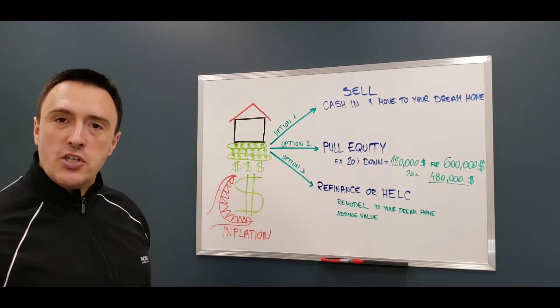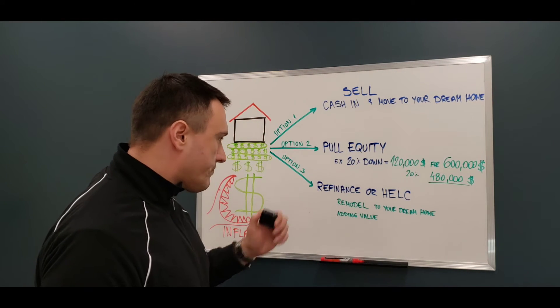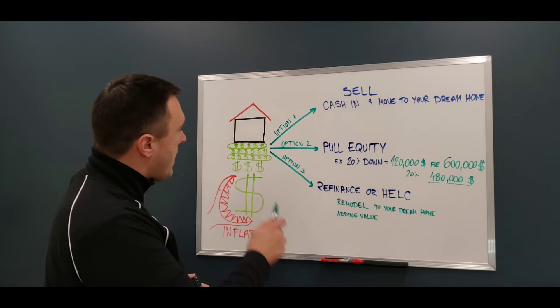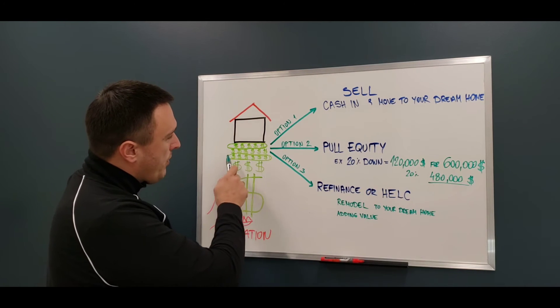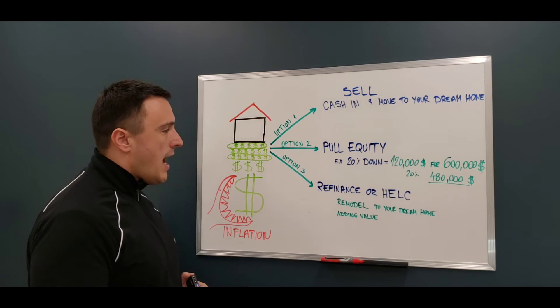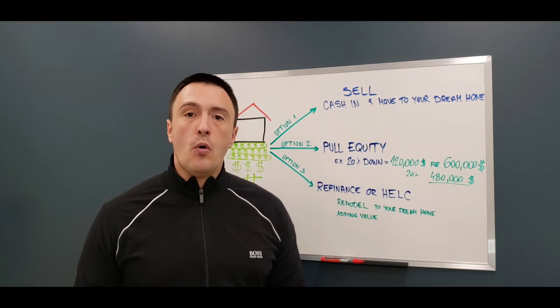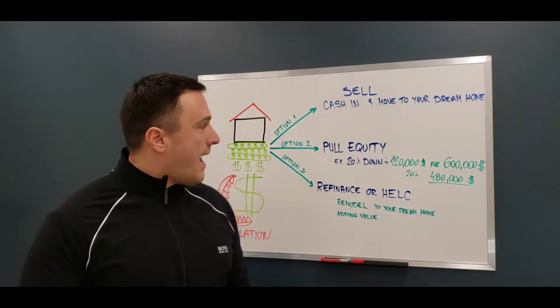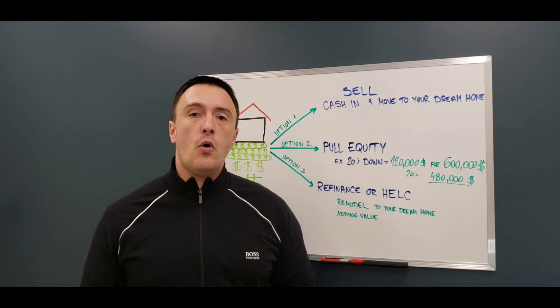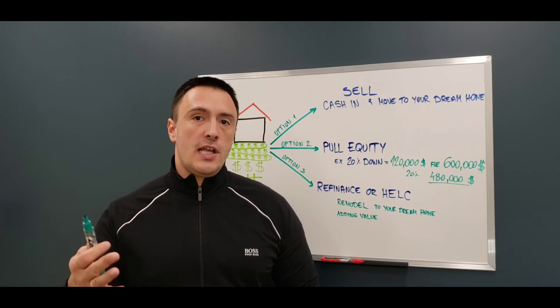Option number three would be to do a refinance or home equity line of credit. You will be pulling out a portion of your home equity and now you can remodel your current home to your dream home, do some renos, and this will add value to your home. This will help you in the future to sell your home for top dollar when the time comes.